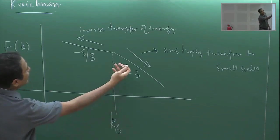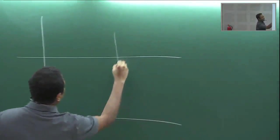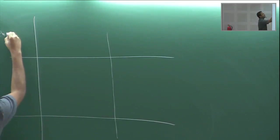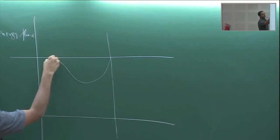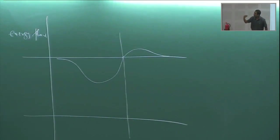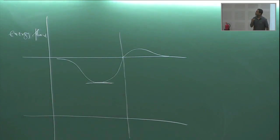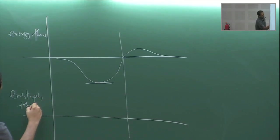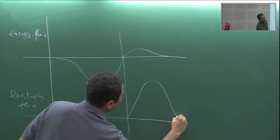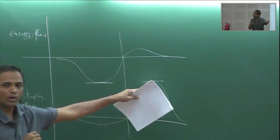The flux picture is: at k_f the energy flux is negative — an inverse energy flux going to large scales — which is constant over an inertial range. Similarly the enstrophy flux is positive and goes to small scales, also constant over some inertial range. Note that predominantly energy goes upscale while a small amount goes downscale, and predominantly enstrophy goes downscale while a small amount goes upscale.